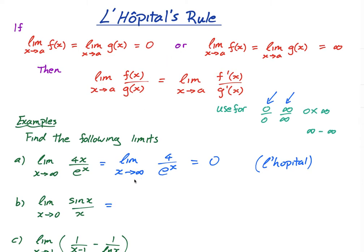The next example is the limit of sin(x) over x as x approaches zero. This is actually quite an important limit — it's sometimes called the fundamental trigonometric limit. As x approaches zero, we get sin(0) over 0, which is 0 over 0: an indeterminate form. But if you graph sin(x) over x, you'll see clearly that it approaches one.